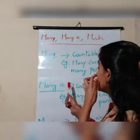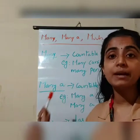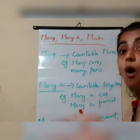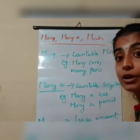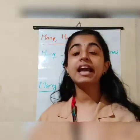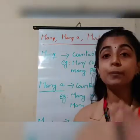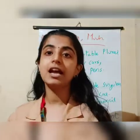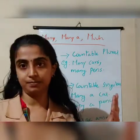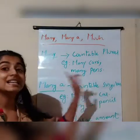Now moving on to the next one: many a. How can I use many a? When is many a used in a sentence? Many a can be used in a sentence only when the noun is countable and singular. So: many is used with countable plural, but many a is used with countable singular — there should be only one.